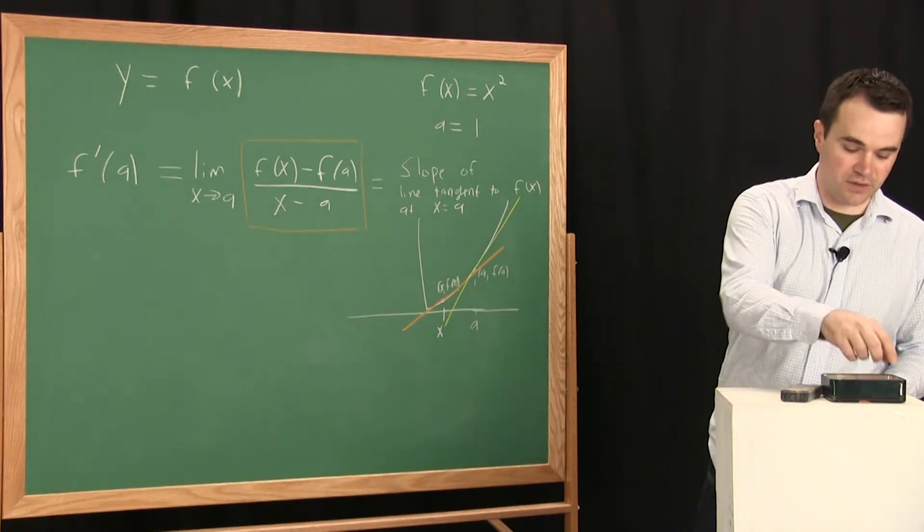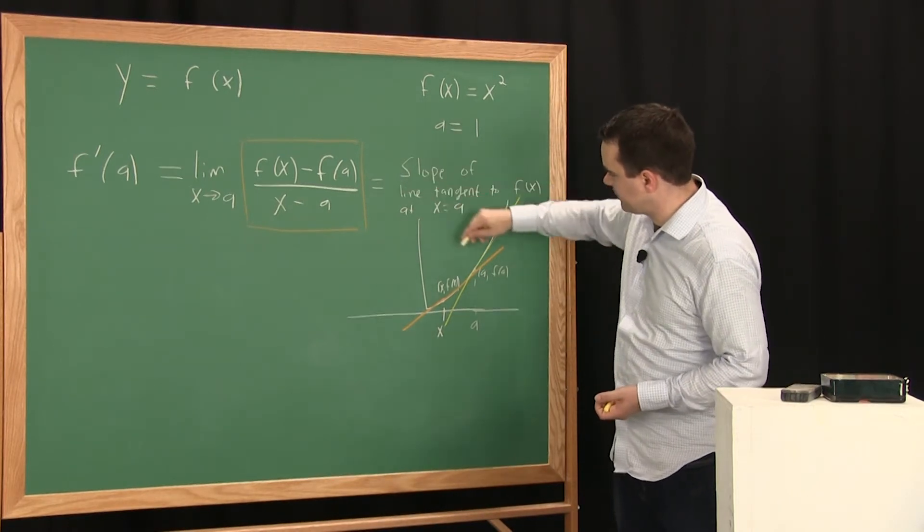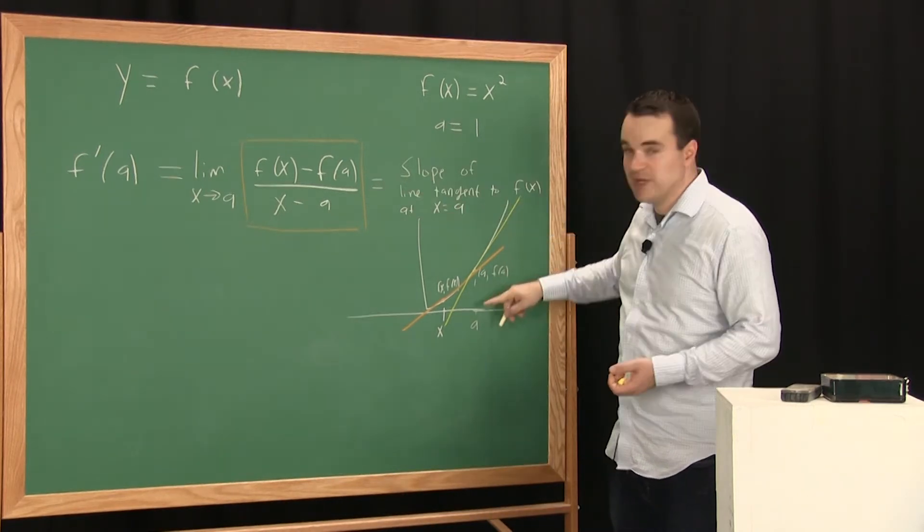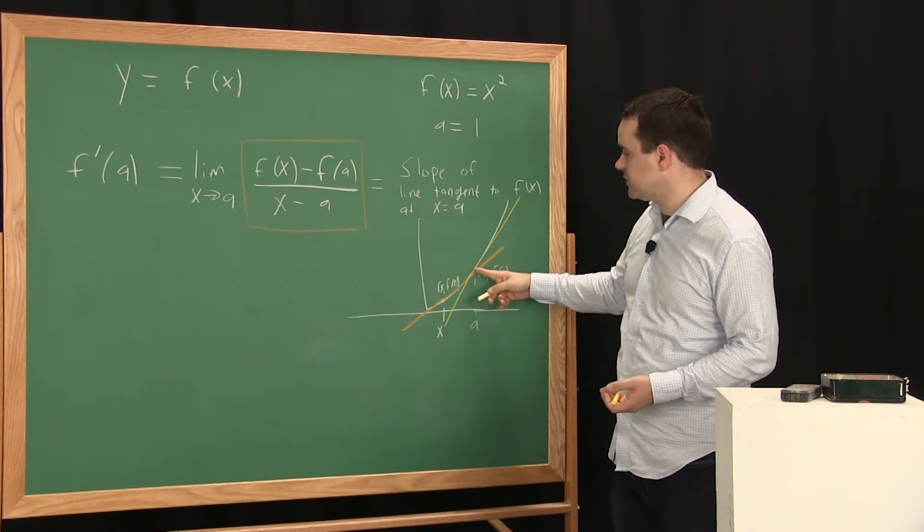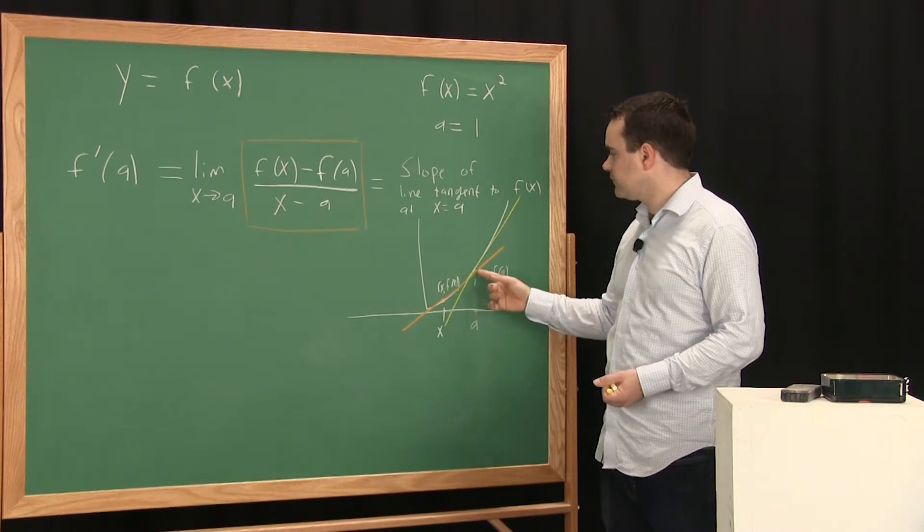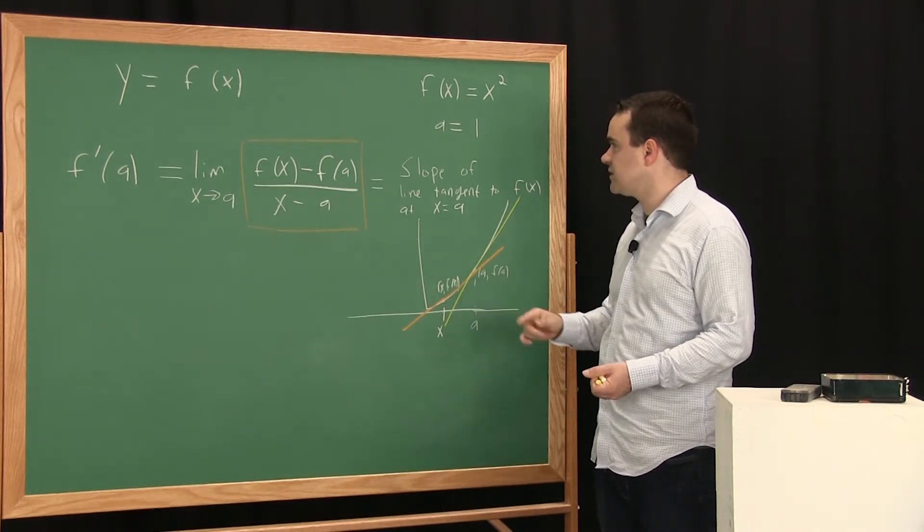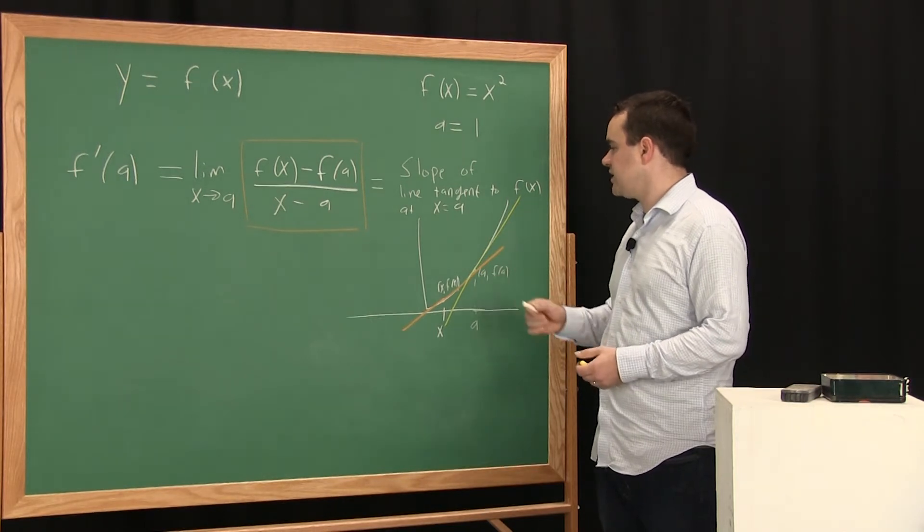So there's many, many lines that go through a f of a, like I could draw this one perpendicular. That would not be a very good approximation to the function because you're going outward in the wrong direction. But here, this is the unique line that gets pretty close to the function as long as your x values stay close to a. So that's why we study tangent lines.